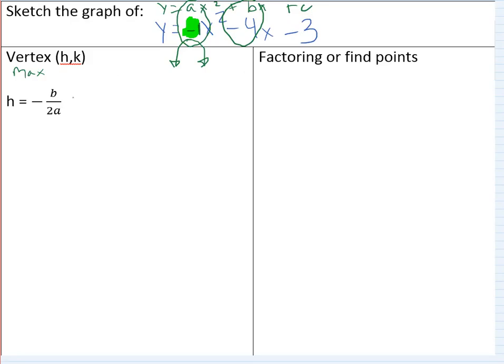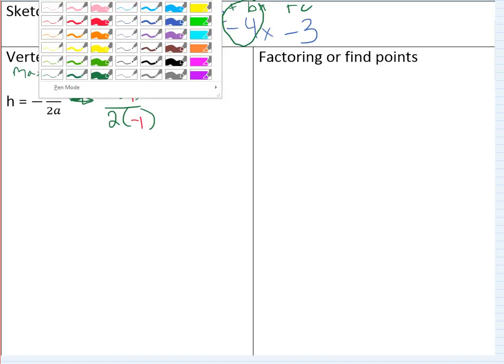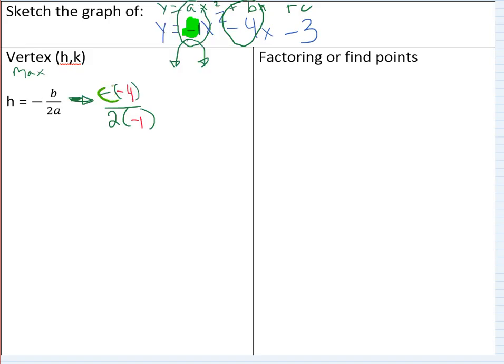So we plug in negative, negative, and plug in something there, plug in something there. So we said b was negative 4, so let's plug in negative 4. And we said a was negative 1, so let's plug in negative 1. So here we go. Negative and negative 4, that's a positive 4. 2 times negative 1 is negative 2. 4 over negative 2, that is negative 2.